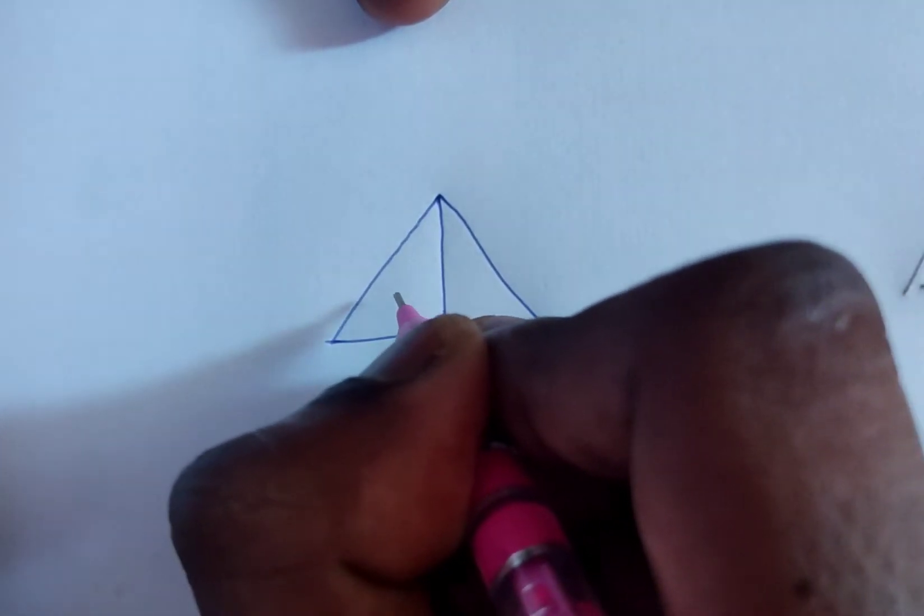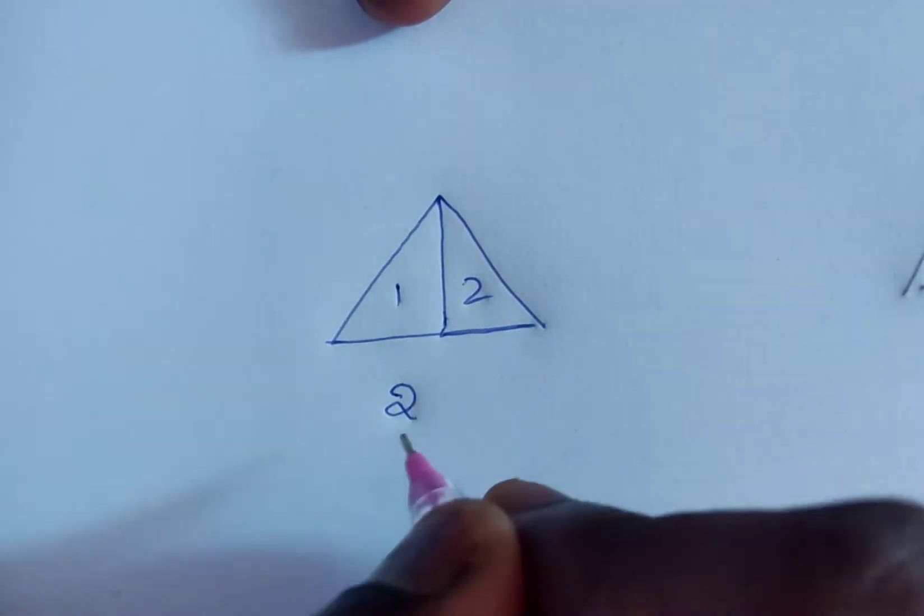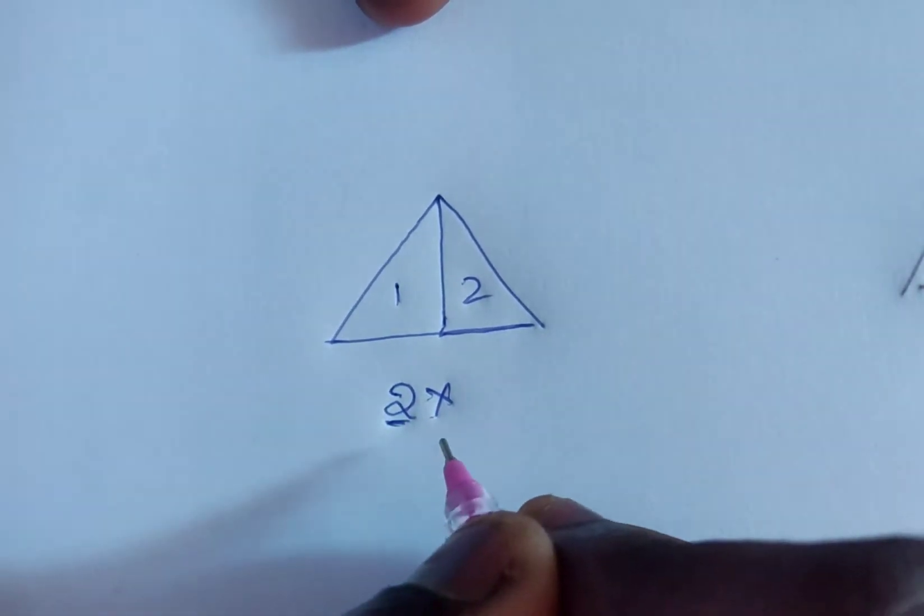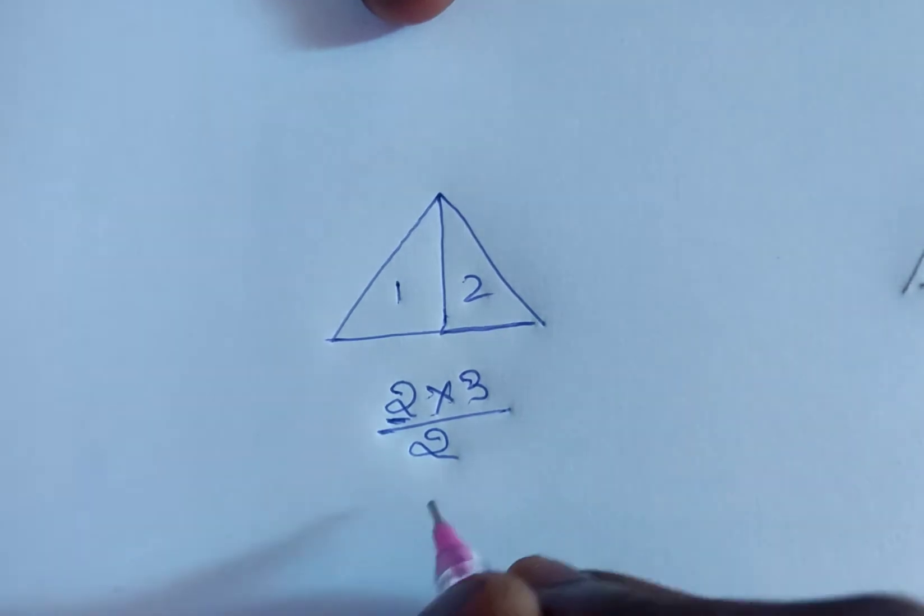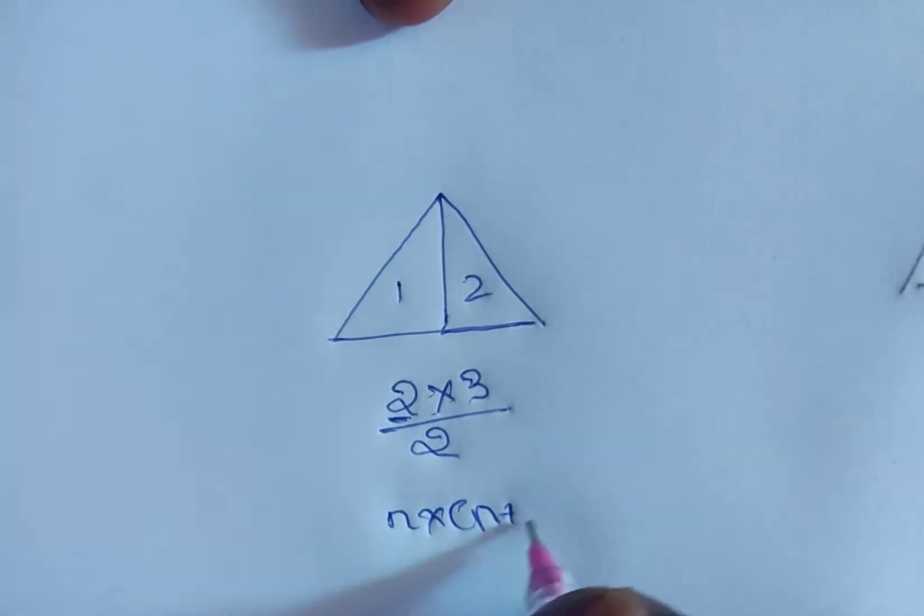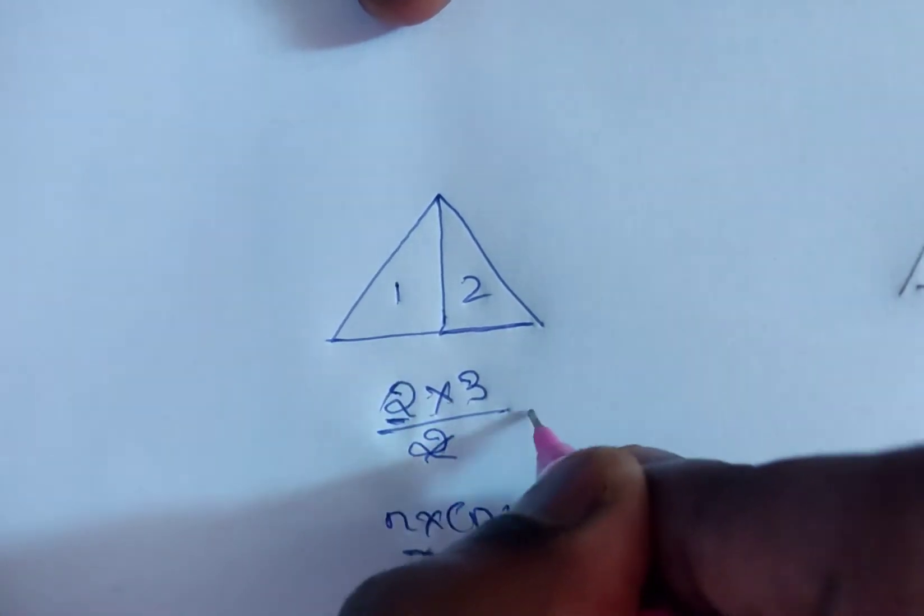Just count the triangles inside, that is 1 and 2, and apply this method. First write the number of triangles, 2, multiply with the next number, that is 3, and divide by 2. This is the simplest formula: n times (n+1) divided by 2. So if you see that, we get the answer as 3.